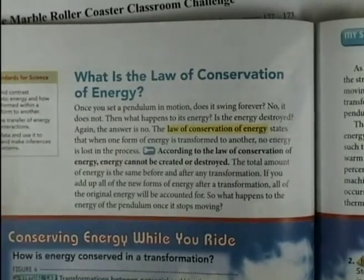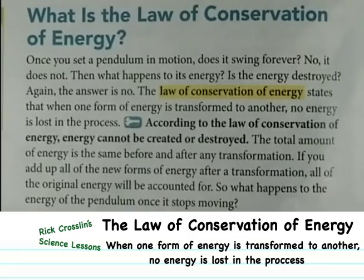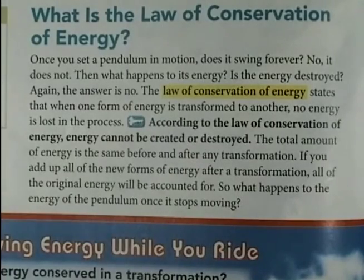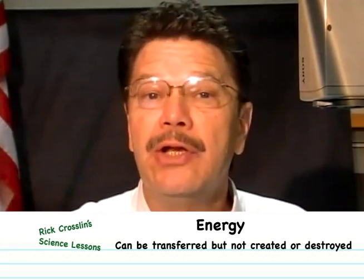Since we're going to be studying energy, we ought to take a look at the law of conservation of energy. We've studied and had several demonstrations about how energy is transferred. It's called the law of conservation of energy. It states that when one form of energy is transferred to another, no energy is lost in the process. Energy cannot be created nor destroyed. From the sun to plants, to eating plants, to digesting the energy through sugar going through your veins, to mechanical movement, to electromagnetic energy, sound, and heat — energy can be transferred, not created nor destroyed.